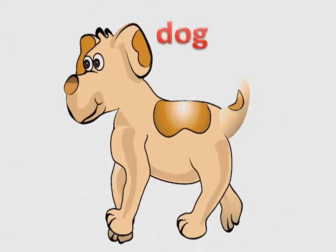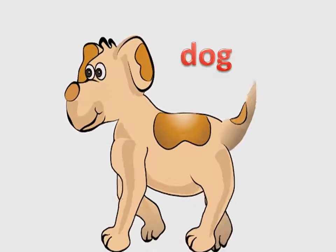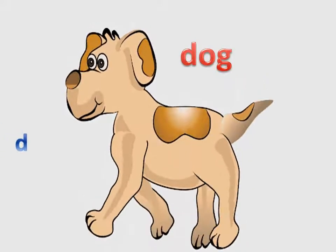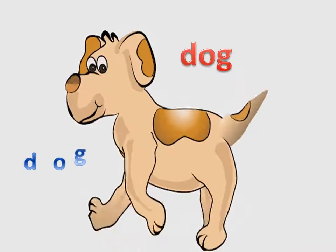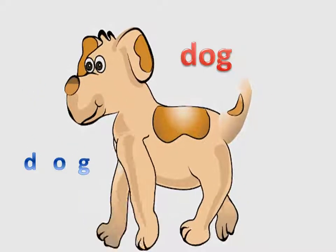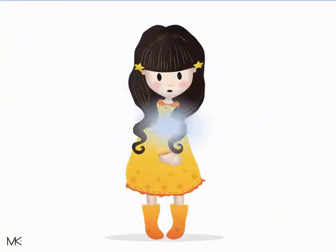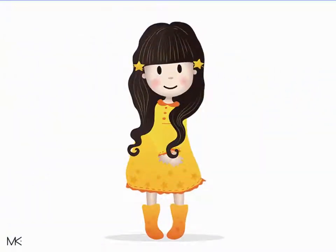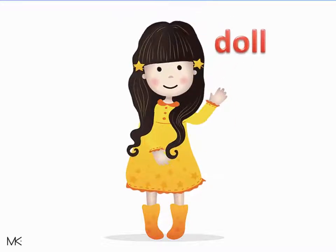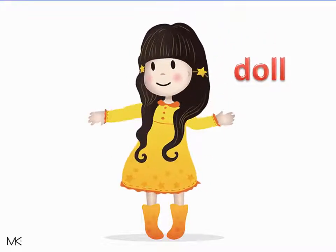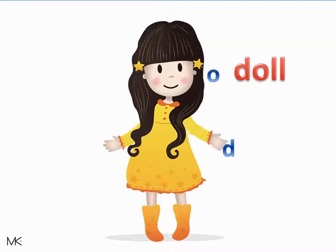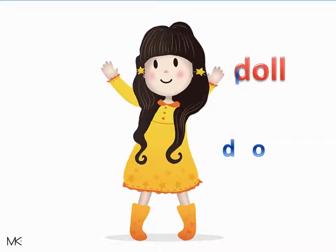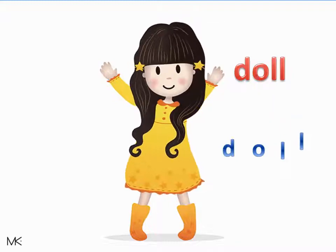Number three: dog. Dog. How do you spell dog? D-O-G. Dog. Very good! Number four: doll. How do you spell doll? D-O-double L. Excellent, KG2!